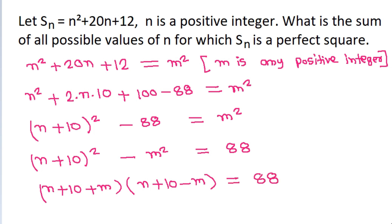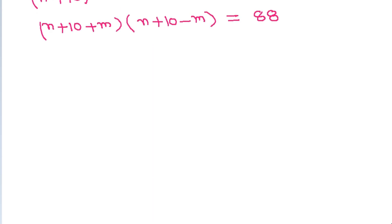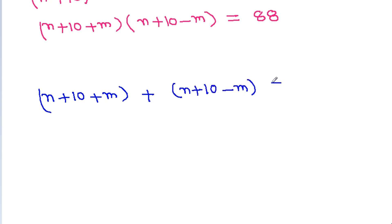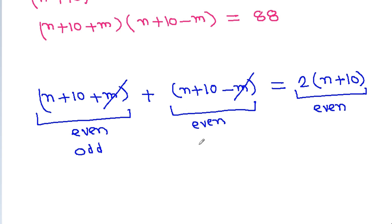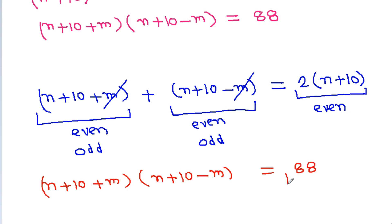If we add n plus 10 plus m and n plus 10 minus m, then m cancels and we get 2 times n plus 10, which is always even. So either both factors are even or both are odd. Since their product is 88, which is even, both values cannot be odd. Therefore both values must be even.